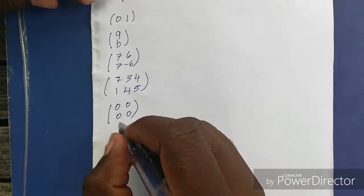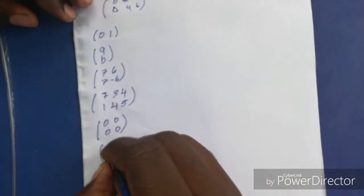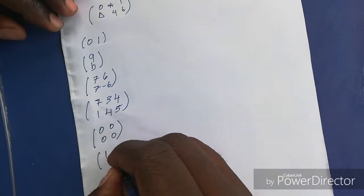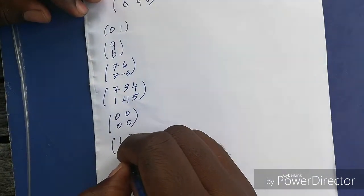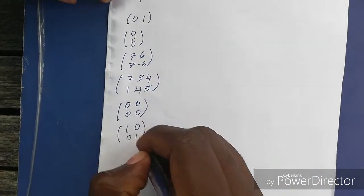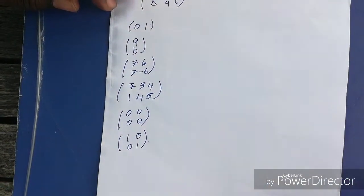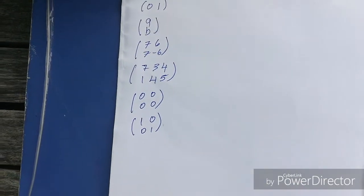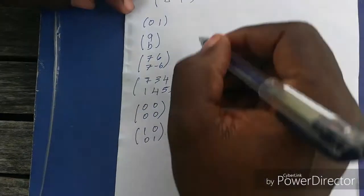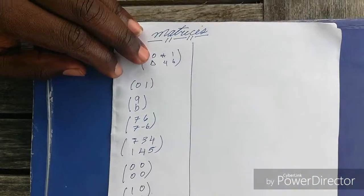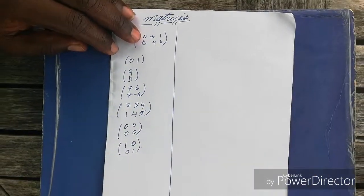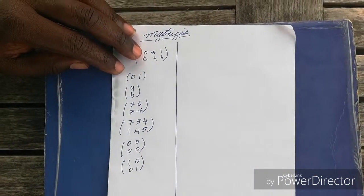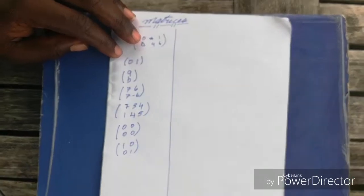And we have the identity matrix. Now the identity matrix is a matrix that is 1, 0, 0, 1. It's also called the diagonal matrix - only the diagonals have information. All right, so what we're going to be doing today is the matrix operations, just a little intro on the matrix operations.